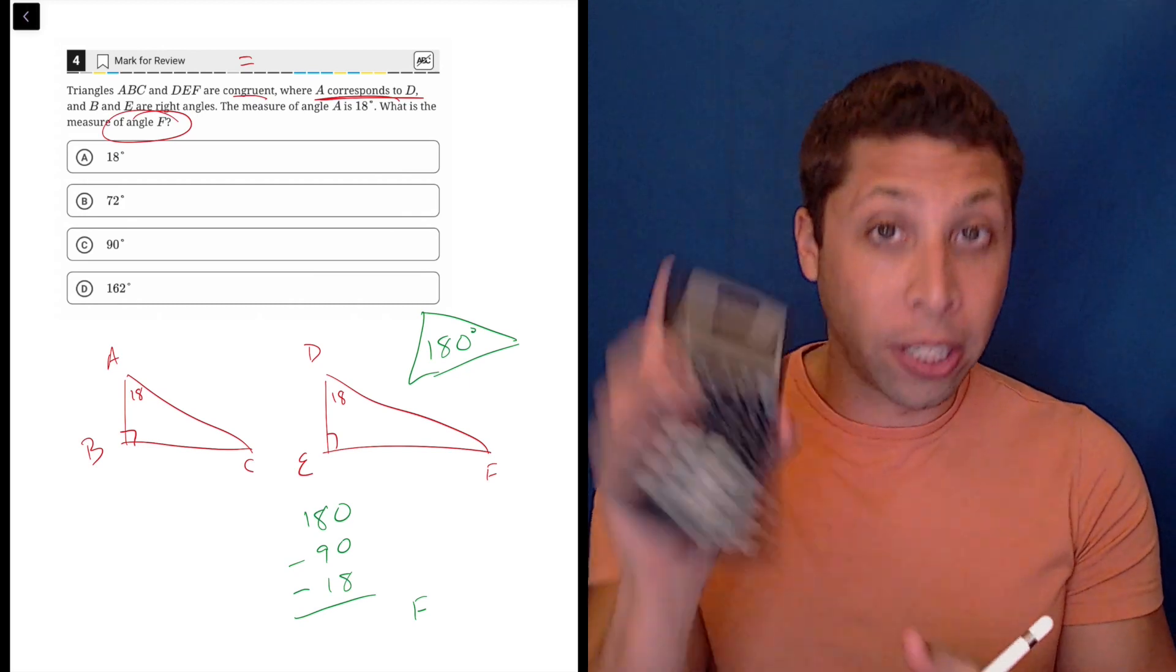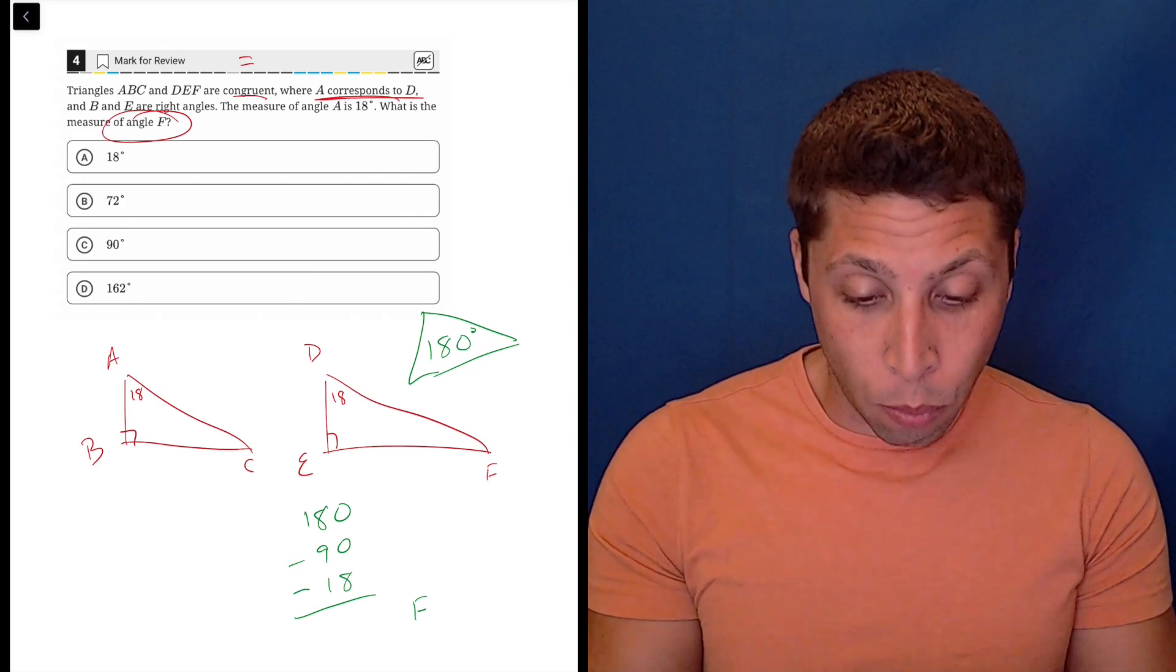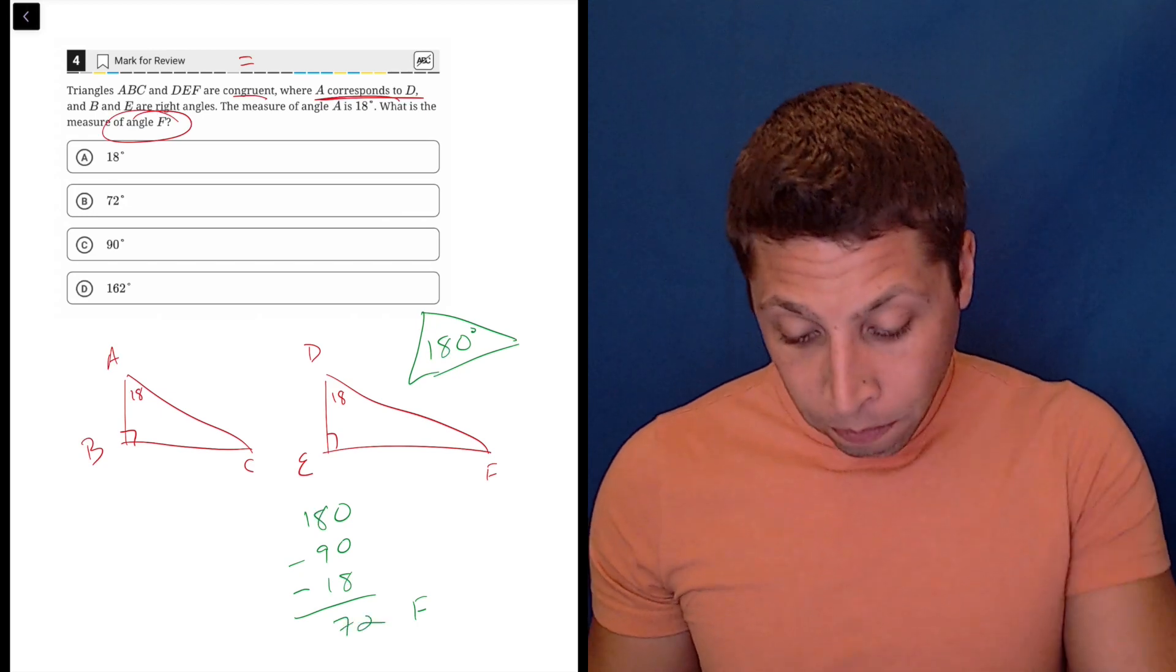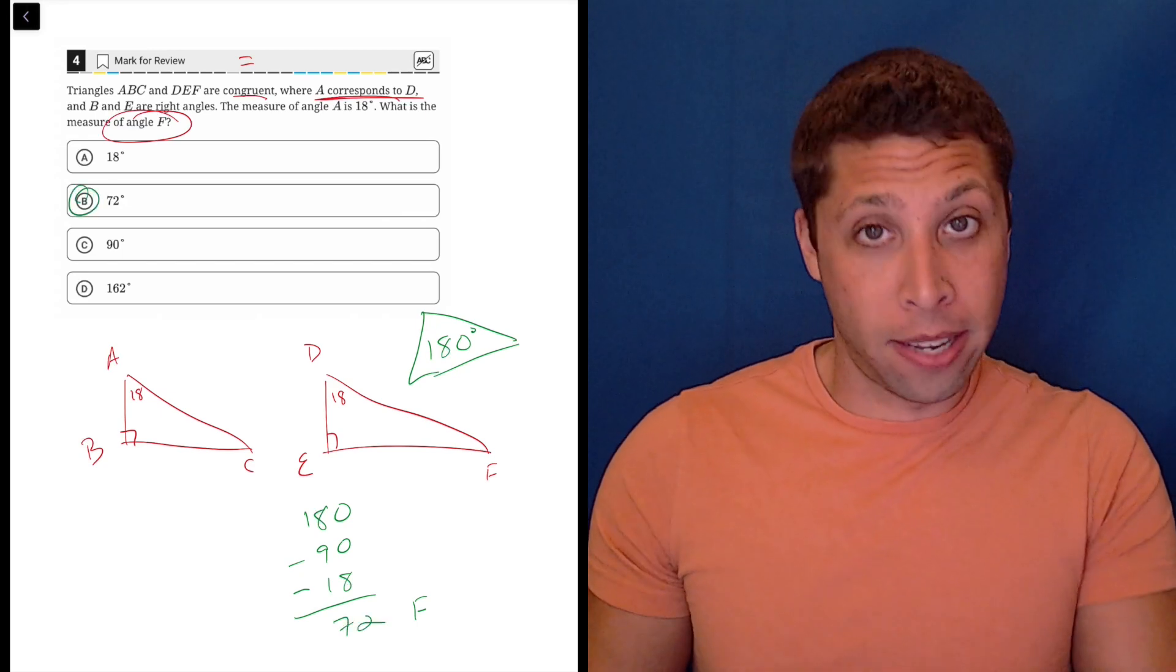So we can grab our calculators to do that. 180 minus 90 is 90 minus another 18 is 72, and that is choice B, and that is the answer.